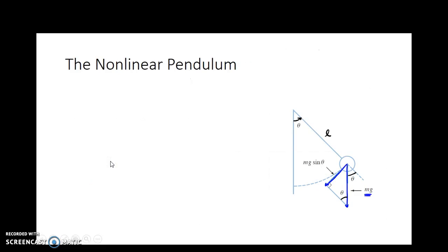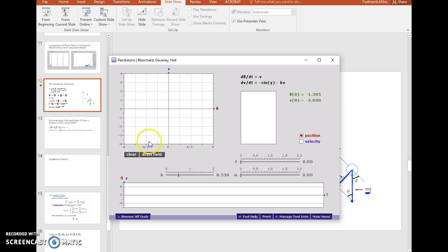So we'll consider next a nonlinear pendulum, and we'll try to build a model for this nonlinear pendulum. The concept behind a nonlinear pendulum is essentially that we have a mass hanging from some sort of rod, and we want to model where that mass is located as time passes. So one thing we could do is we could actually model this to see what it looks like, and I'm just going to click somewhere here in this phase plane, and we'll see what V and theta mean in a second.